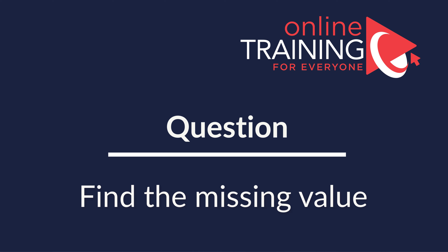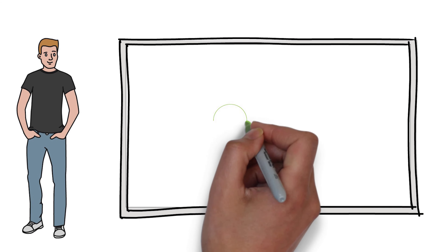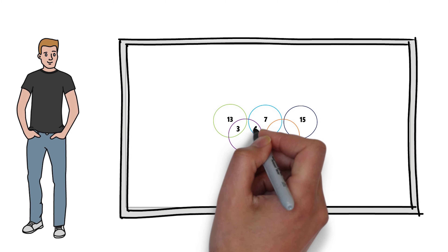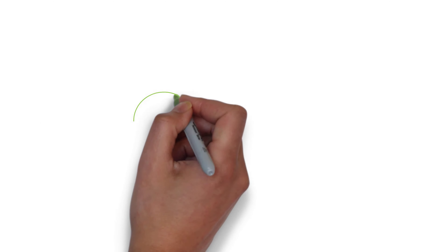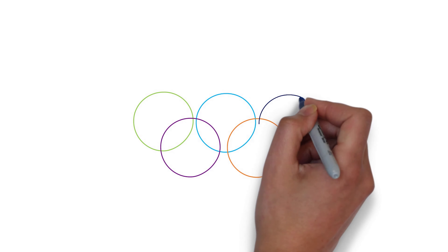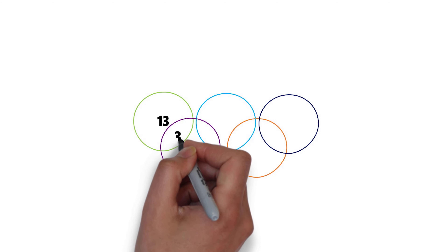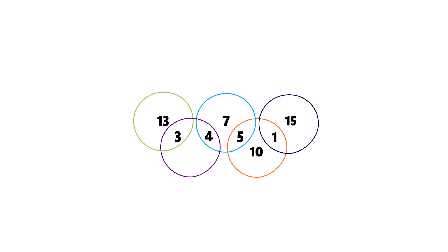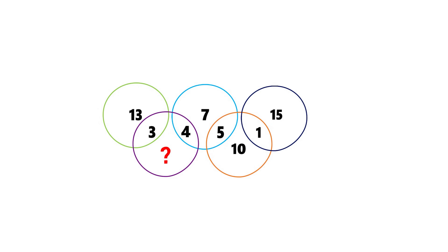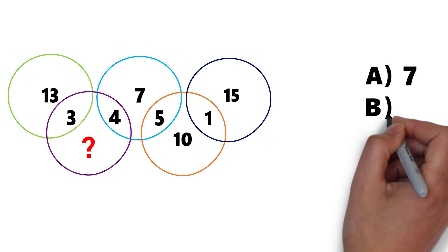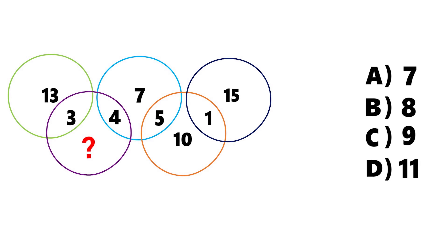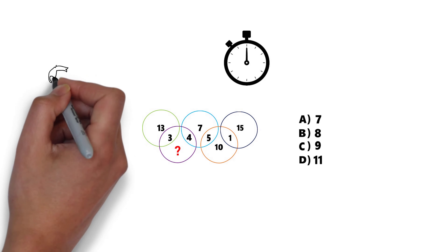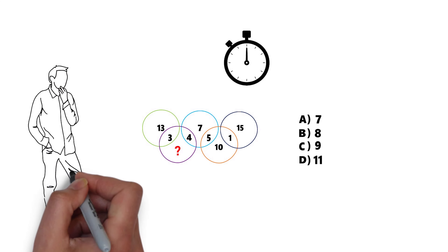This is one of my favorite questions because it's very frequently used on the test. You're presented with 5 crossing circles, all different colors. There are numbers inside the circles as well as at the intersections. The numbers are 13, 3, 4, 7, 5, 10, 1, and 15. One number is missing, highlighted by a question mark. The choices are A — 7, B — 8, C — 9, and D — 11. Give yourself 10 to 15 seconds.